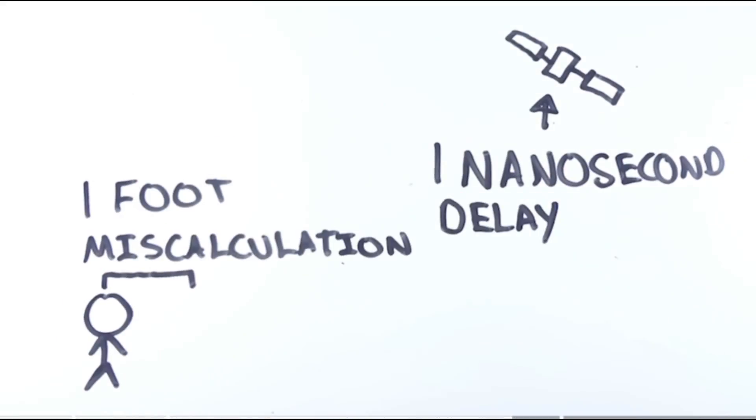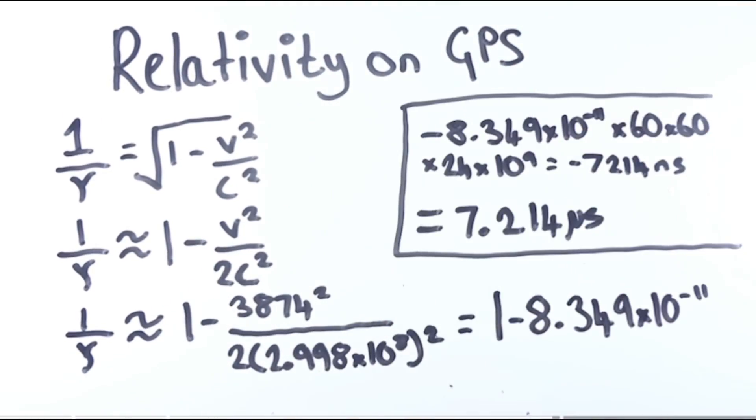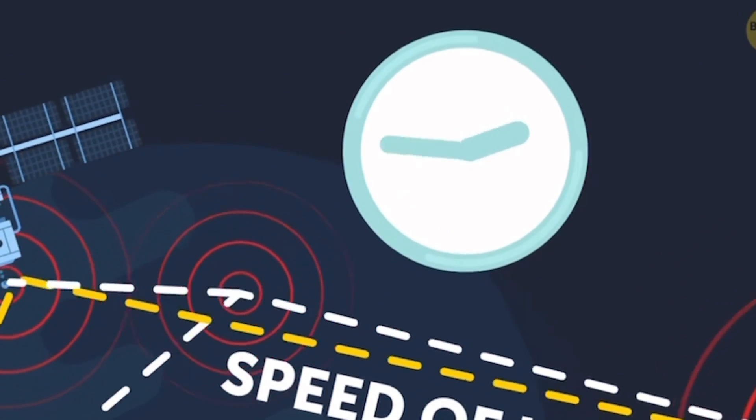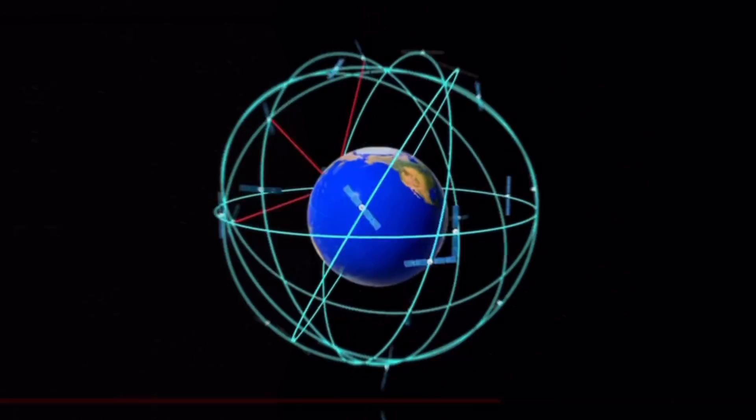When your phone is directing you to the nearest In-N-Out, or tracking your boyfriend's location, it is using numerical values and mathematical systems to calculate the distances and times between your location and satellites.